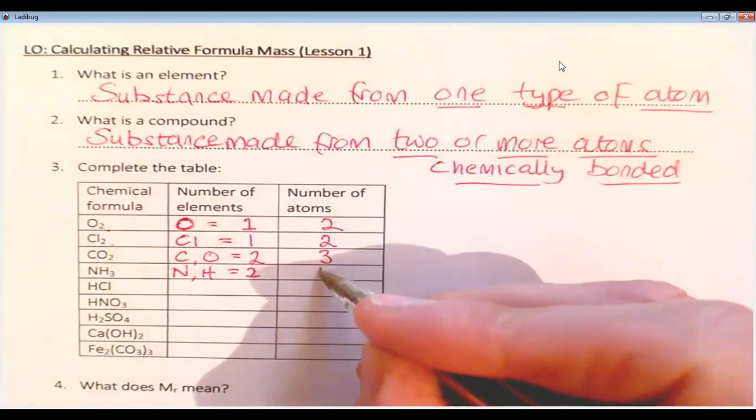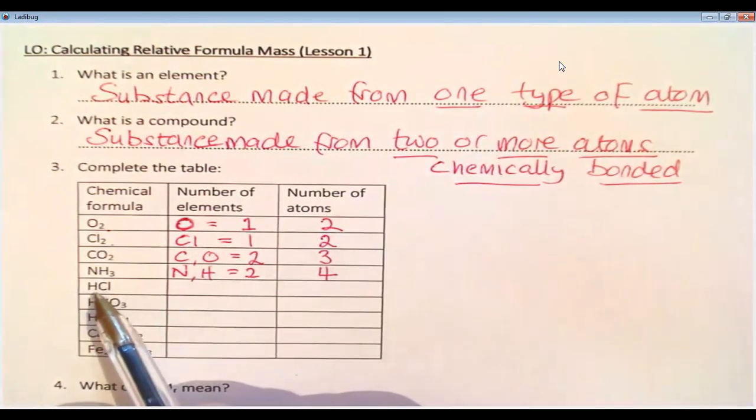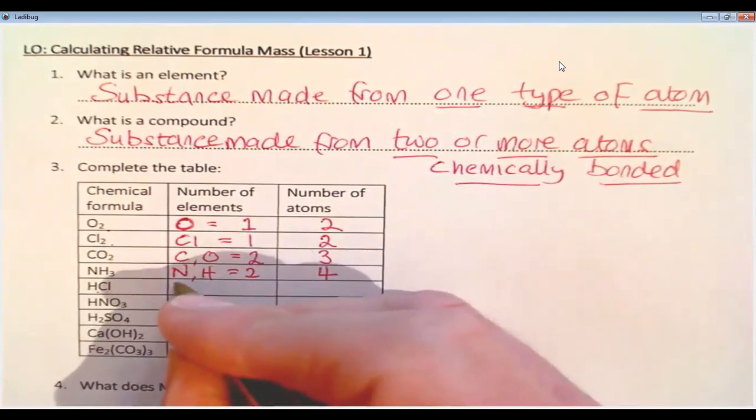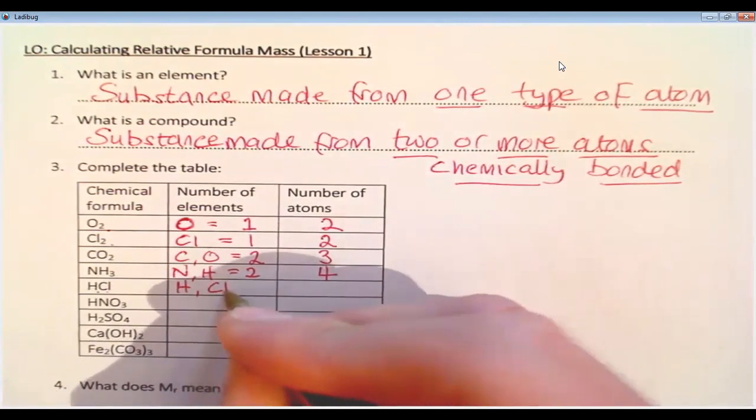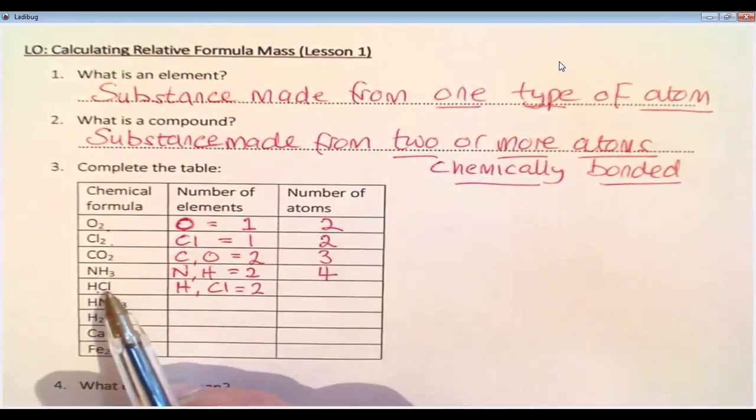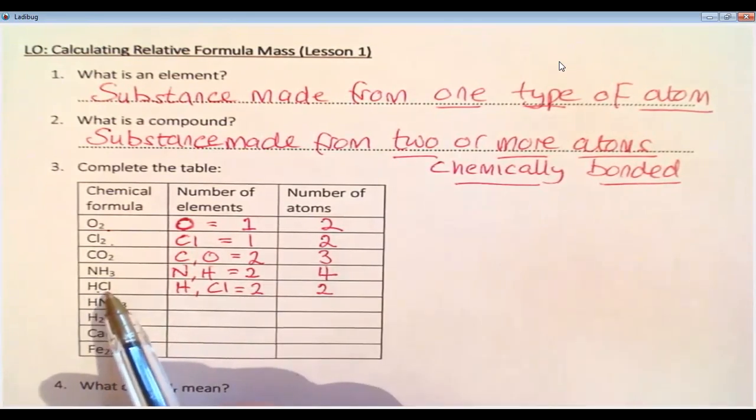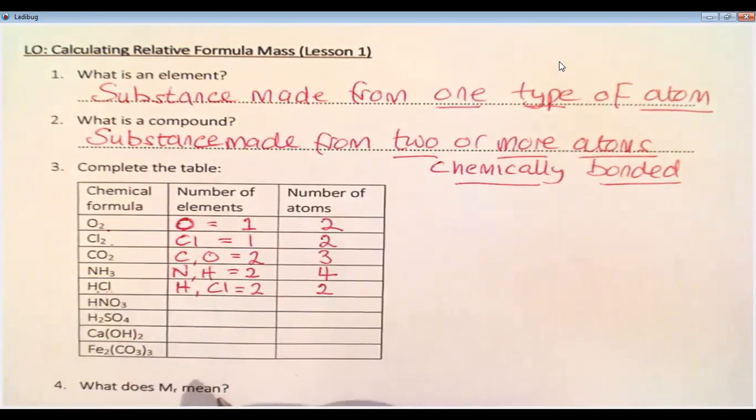Then we have hydrogen chloride or hydrochloric acid if you dissolve it in water. So we have HCl. So H and Cl. So that is two elements. But also there are two atoms because both of those elements have no number. No number indicates one. So one plus one is two.